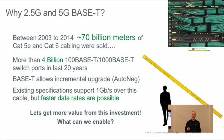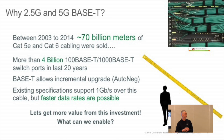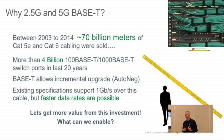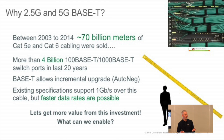Auto-negotiation makes this easier. You plug in base-T, it talks to each other, it chooses the highest common denominator. The old PC over there still running 100 meg works just fine with the thing running 10GBase-T. Existing specifications for Cat5e and Cat6 only support 1 gig, but we can actually do faster. The cable is a huge investment — depending on what you're doing, it's $300, $400, $500, $700 a run.